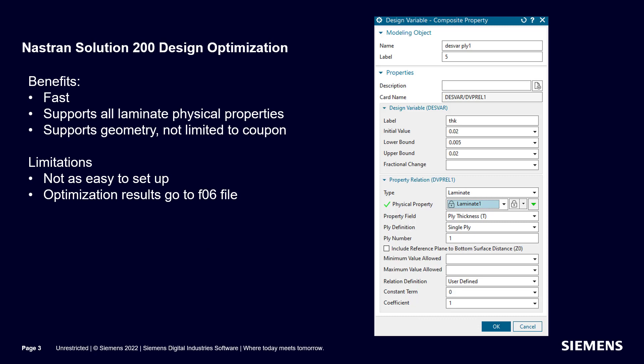Another option is using Nastran Solution 200 Design Optimization. This does support geometry and is not limited to a coupon. It also runs very quickly and supports all your laminate physical properties. Some of the limitations are it's not quite as easy to set up, and the optimization results go to an F06 file, so post-processing is not quite as elegant.